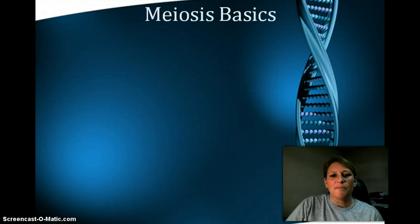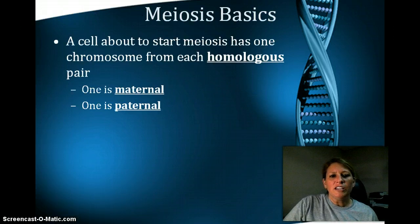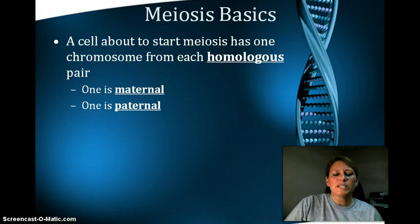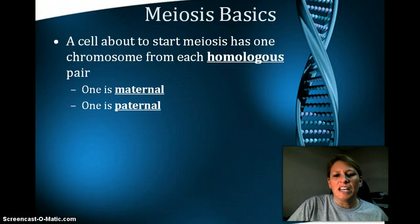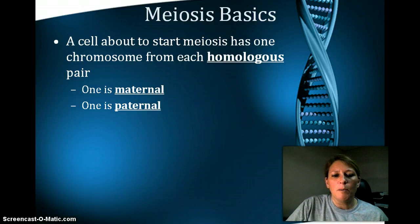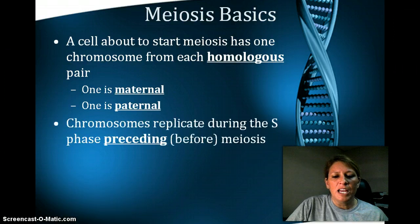We're going to talk about some basics, and we're going to be looking at chromosomes, specifically homologous pairs. When we talk about homologous pairs, in most instances, we're going to have one from the mom — maternal — and one from the father — paternal.